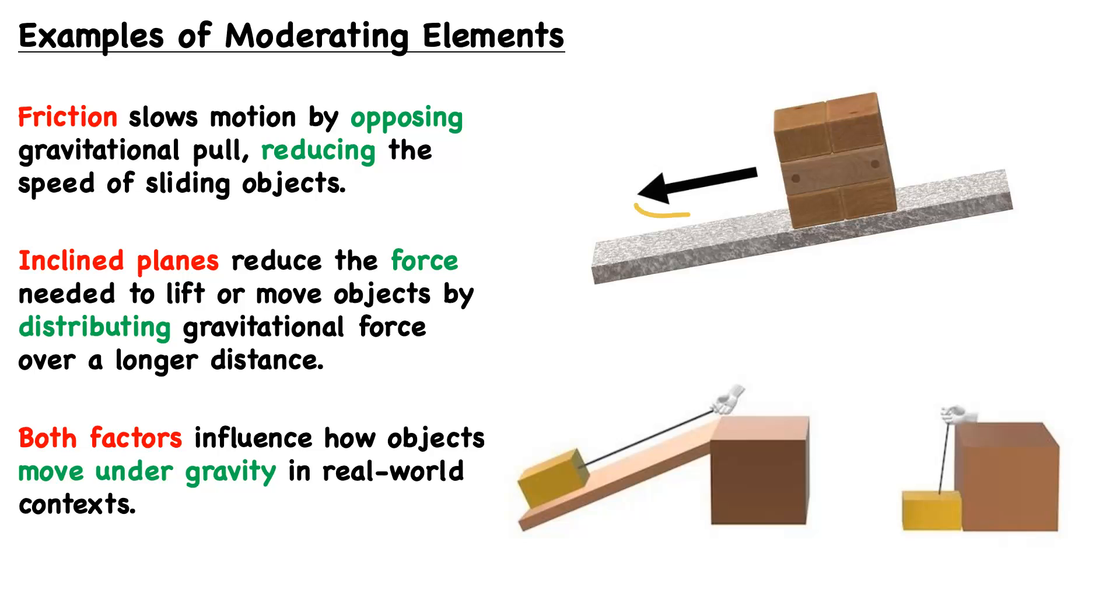It is gravity that is seeing this object slide down this ramp, but friction is reducing that speed, reducing that motion. It's opposing the gravitational pull.